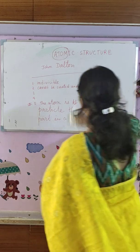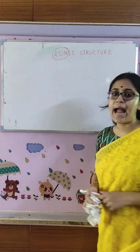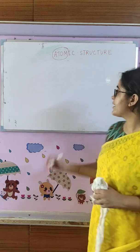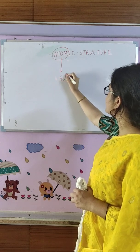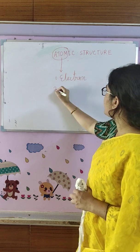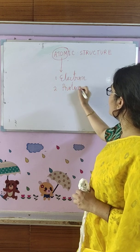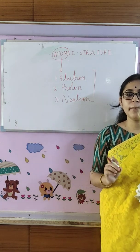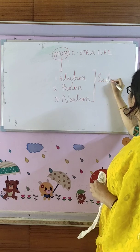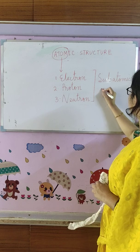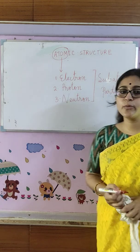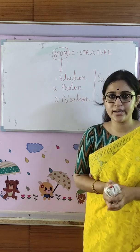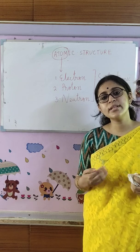The first point that John Dalton told is: atom is indivisible — that is, atom cannot be divided into smaller particles. But later it was seen that inside the atom, there are three particles: electron, proton, and neutron. These three particles are known as the sub-atomic particles of atoms. As they are divisions of atoms, these particles are known as sub-atomic particles. I am not going into the detailed discovery of electron, proton and neutron, because it is not so important. We just read those to know and have the idea of how these sub-atomic particles were discovered.